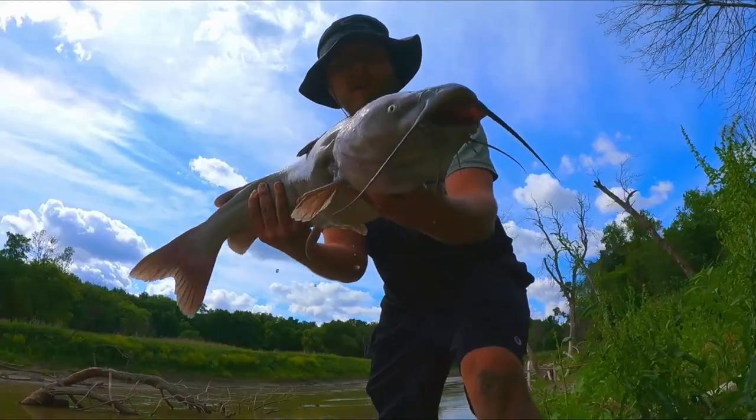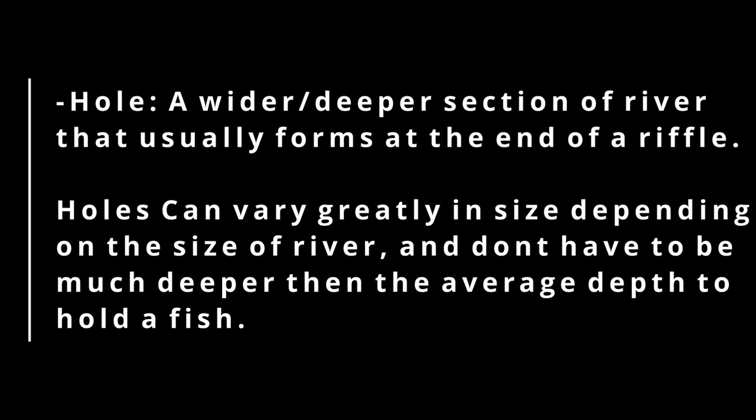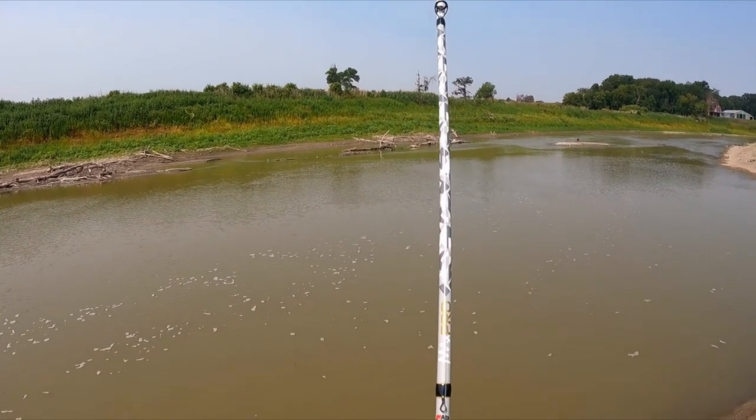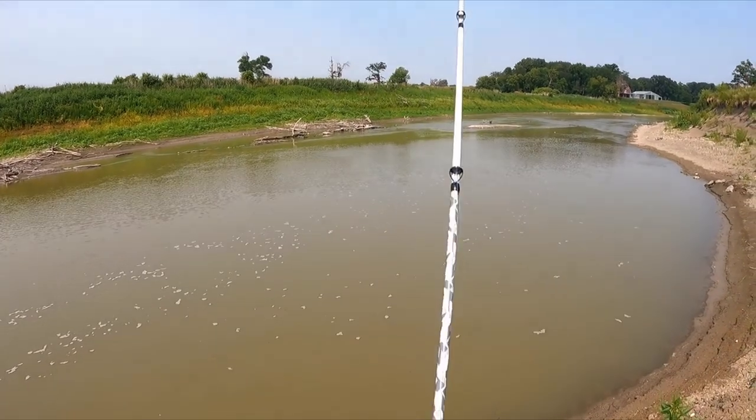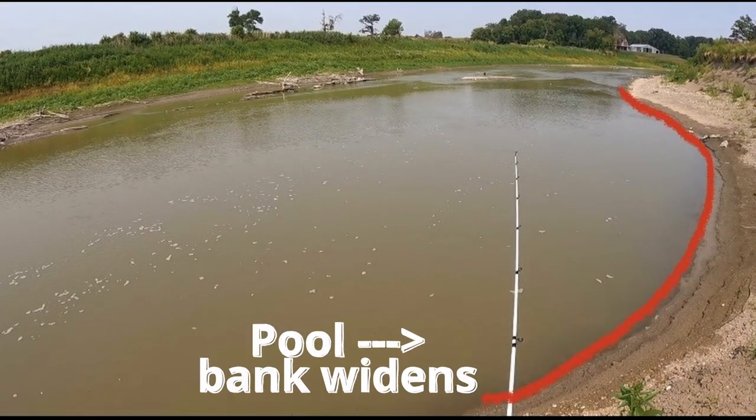This leads us to our next term: a hole or pool. A hole is just as it sounds — it's a wider and deeper section of river that a lot of times forms at the end of a riffle. Holes can vary greatly in size depending on the river, and they don't have to be much deeper than the average depth of the river to hold the fish. This clip clearly shows how the bank widens out and creates a pool at the end of this riffle.